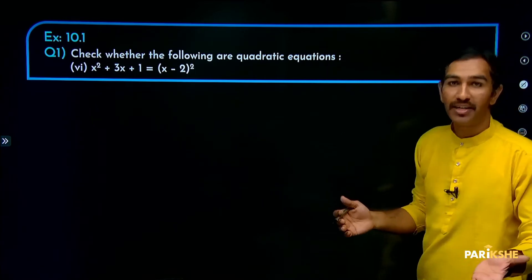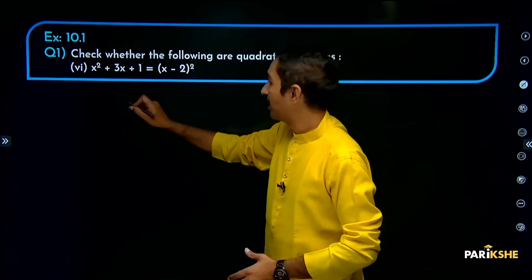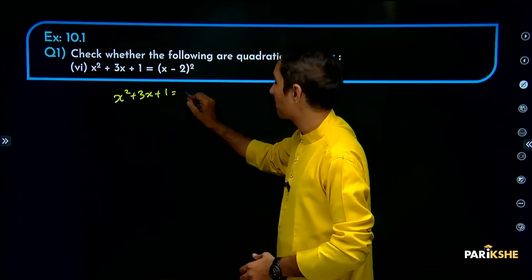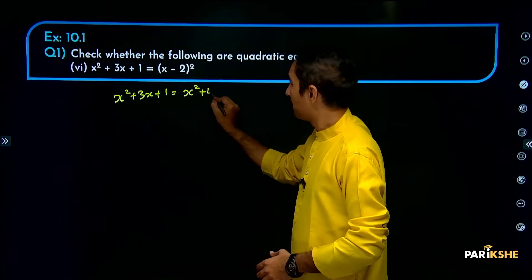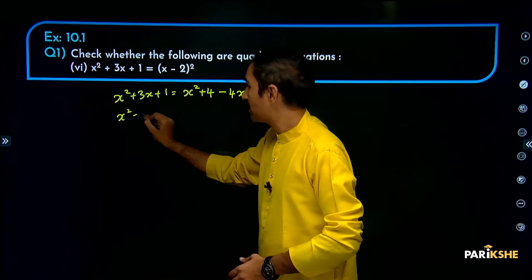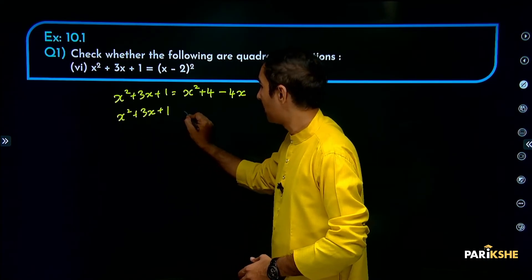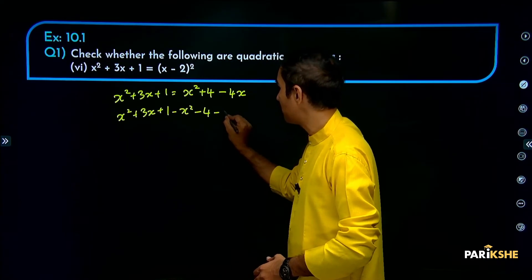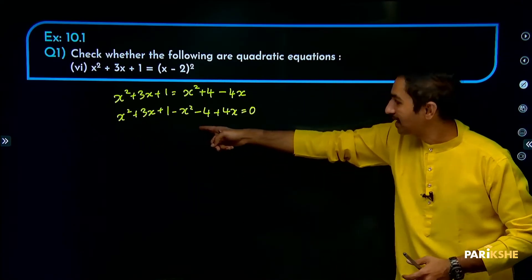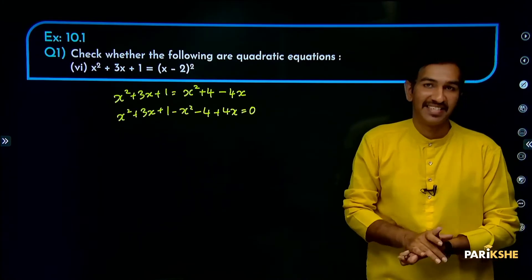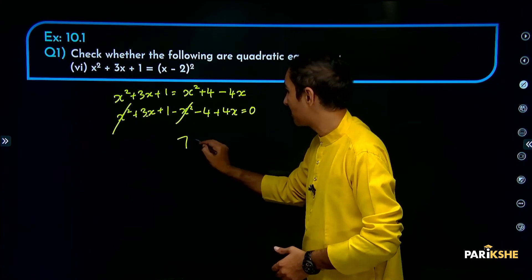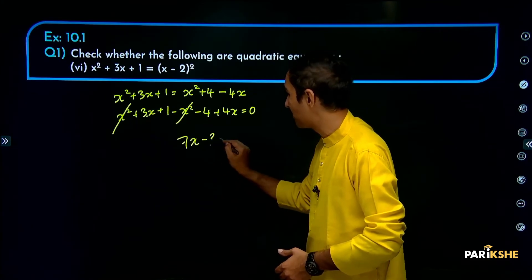Check whether the following equations are quadratic equations or not. Consider x squared plus 3x plus 1 as it is. Using the A minus B whole square formula: A squared plus B squared minus 2AB. So: x squared plus 3x plus 1 minus x squared minus 4 plus 4x is equal to 0.